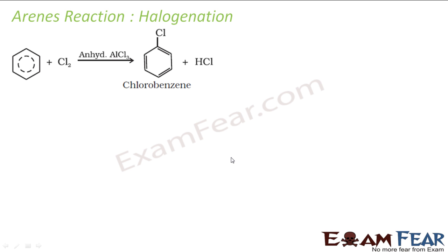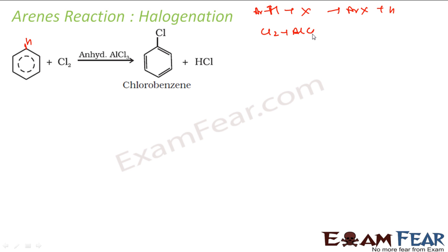Let us understand the halogenation reaction. This happens in the presence of a Lewis acid like ferric or aluminium salt of the halogen you are adding. The reaction is: arene reacts with some halogen, you get arene with the halogen and hydrogen is out. In this case chlorine will replace a hydrogen. AlCl3 will make the chlorine all the more electrophilic. So I have Cl2 reacted with AlCl3, which gives me Cl+ and AlCl4−. This Cl+ is my strong electrophile.